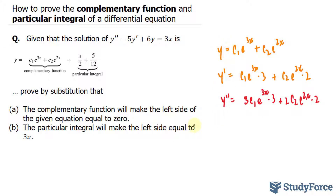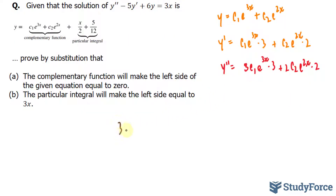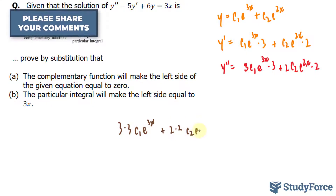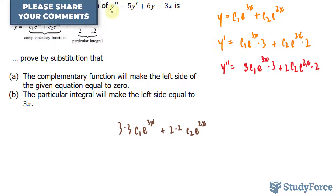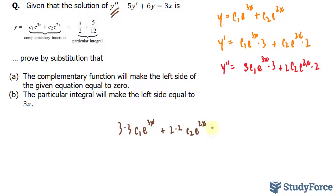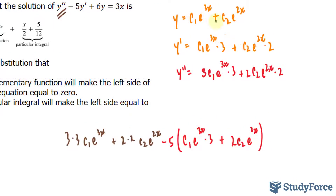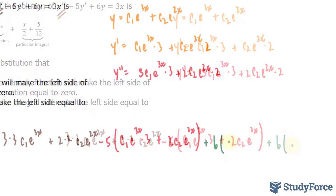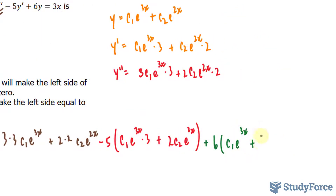I'll substitute all three of these into the left side of this equation and see what happens. We end up with 3 times 3c1·e^(3x) plus 2 times 2c2·e^(2x) — substituting y double prime — minus 5 times the expression for y prime, and then plus 6 bracket c1·e^(3x) plus c2·e^(2x) bracket — substituting y — and this should equal 0.